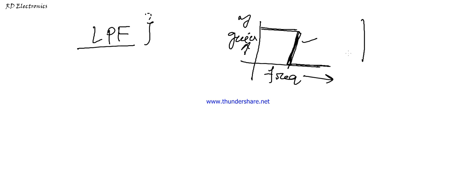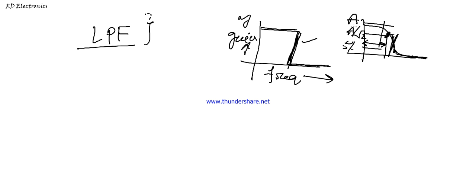In a practical sense, the response looks like this: there is a pass band, then a gradual transition band, and then a stop band. If we consider the maximum gain as A, then from the starting value down to the RMS value A/√2, this is known as the pass band. From the RMS value down to 5% of the maximum value, this band is known as the transition band. After this, the wave is attenuated — this is known as the attenuation (stop) band.